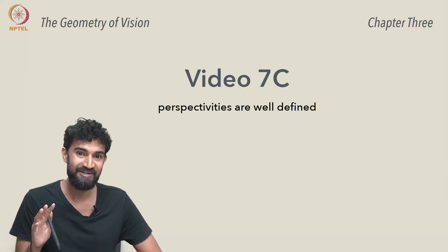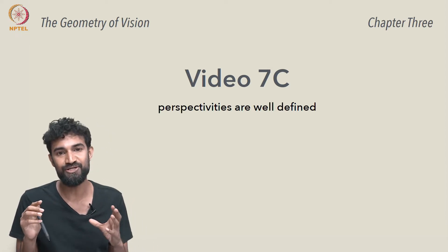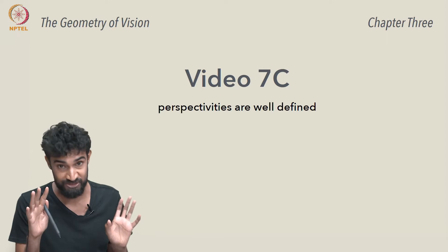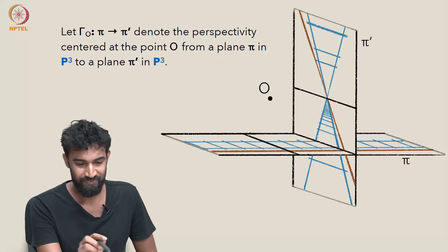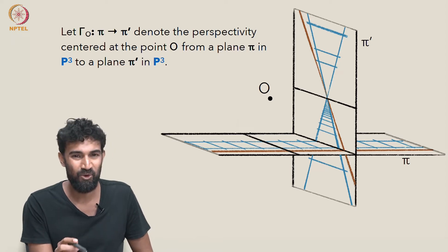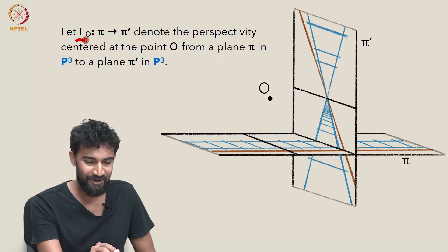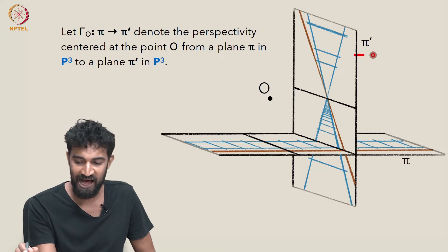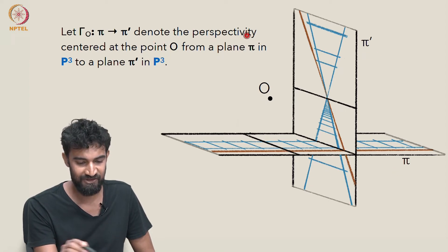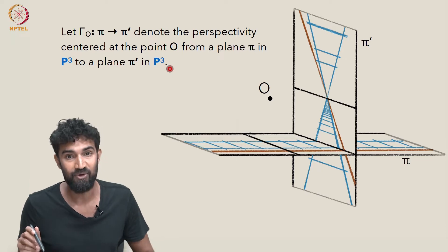Although we've defined perspectivities and seen some examples, we still haven't actually shown carefully that perspectivities are well defined. So let's do that now. Let gamma O from pi to pi prime denote the perspectivity centered at the point O from a plane pi in P3 to a plane pi prime also in P3.